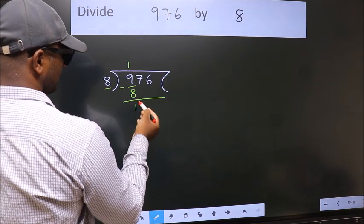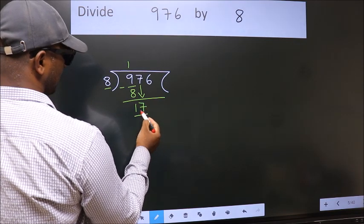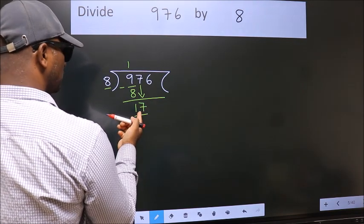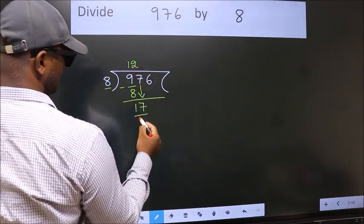After this, bring down the beside number. So, 7 down. So, 17. A number close to 17 in 8 table is 8 2s 16.